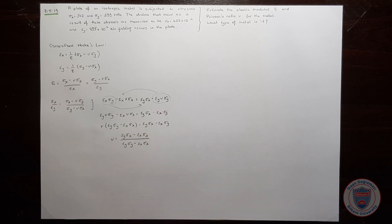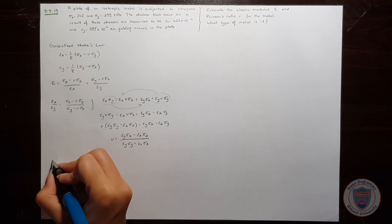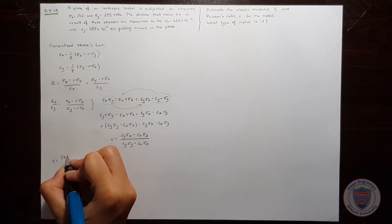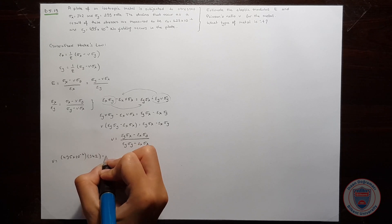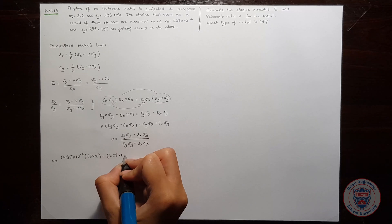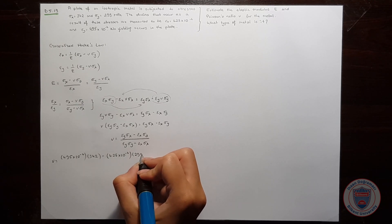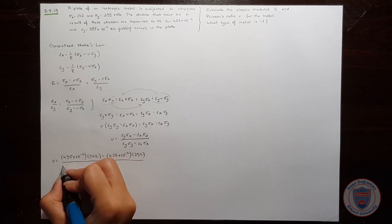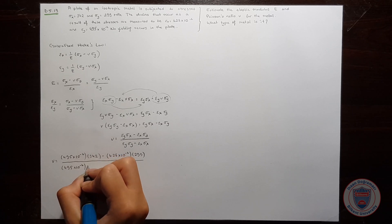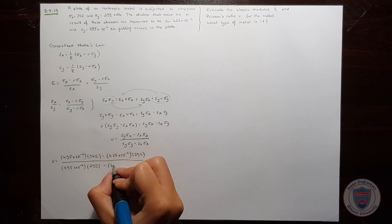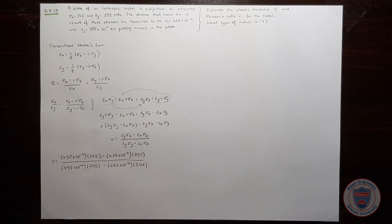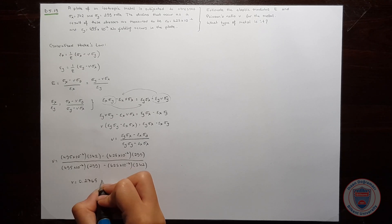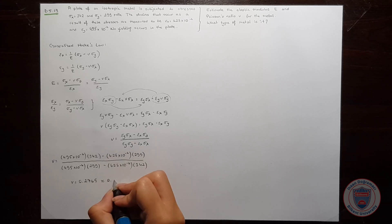We have the values for all of these variables, so let's substitute the values. Calculating, Poisson's ratio is equal to 0.278, approximately.